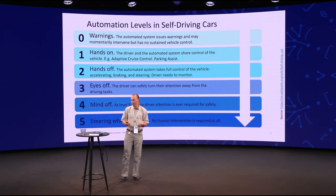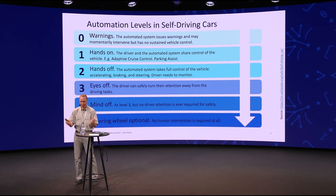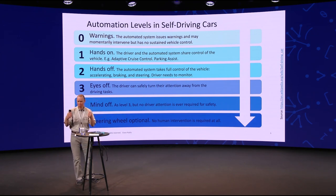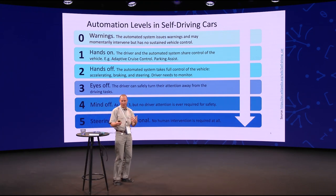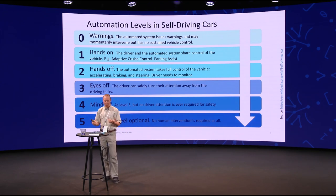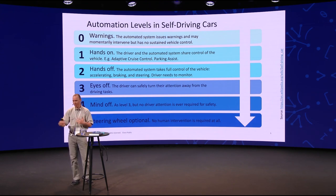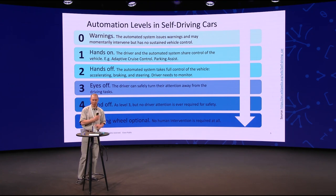With level two, it is driving autonomously much of the time, maybe most of the time, but the responsibility is still with the driver. You have to sit there and have your hands on the wheel. You are still responsible. You need to be monitoring — you are still the guy that is driving. On level three, you can take your eyes off the road. You have to be there and ready to take over at any time, but you will get an advance warning of a few seconds or a minute.